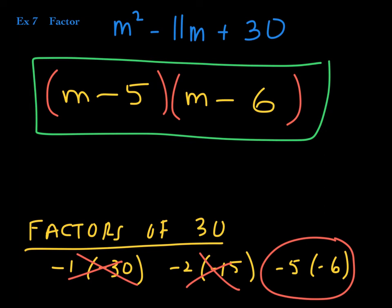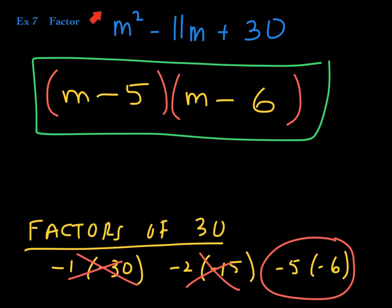You might be thinking that all we have to do is find factors of the last number that add up to the middle coefficient. That's true, but only as long as the leading coefficient is 1. If the leading coefficient is not 1, things get a little more challenging.